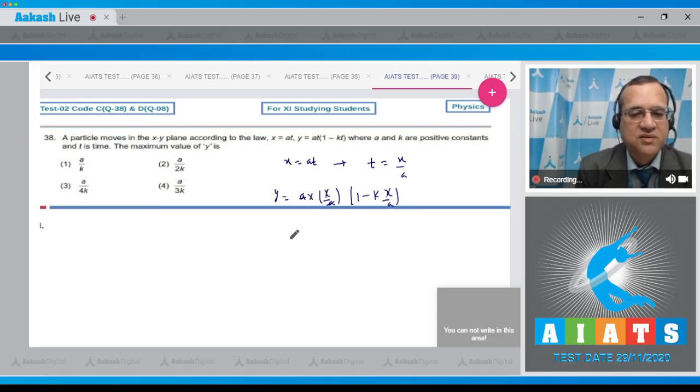y is equal to a and t is x by a and 1 minus k x by a. This will cancel out. So y is equal to x 1 minus k x by a, which is equal to x minus k x square divided by a. To get y maximum, dy by dx should be put equal to 0.